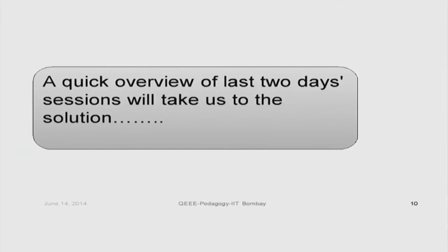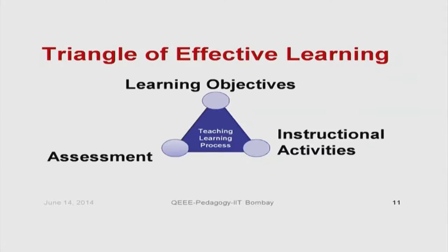This problem is very severe as it affects the effectiveness of the teaching-learning process itself. The answer lies with us — if we do a quick overview of the last two days' sessions we will automatically come to the solution. Let us go through various aspects you have been studying. This is what we call the triangle of effective learning — the entire teaching-learning process can be considered as a tripod resting on three legs: learning objectives, instructional activities, and assessment.